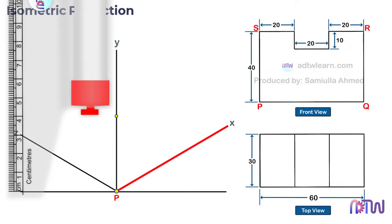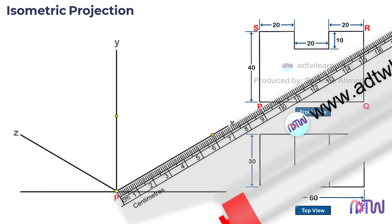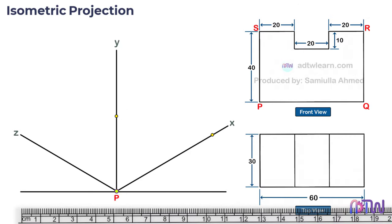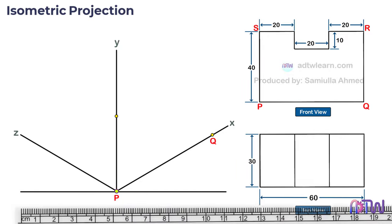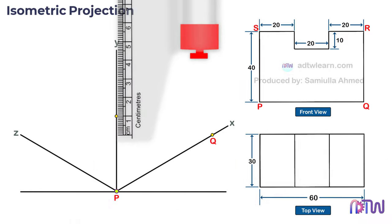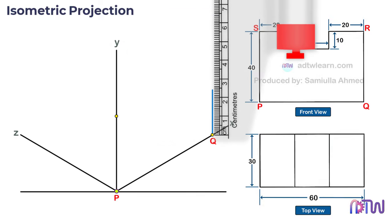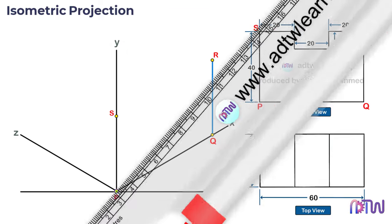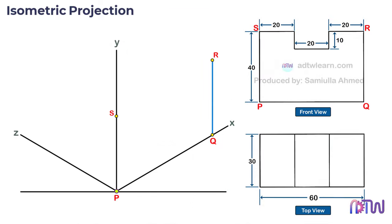Label this point as Q. We can see this shape as a rectangle, so using a ruler and taking this vertical line as a reference, draw a 40 millimeter vertical line from point Q. After this, using the x-axis as a reference, join these points.